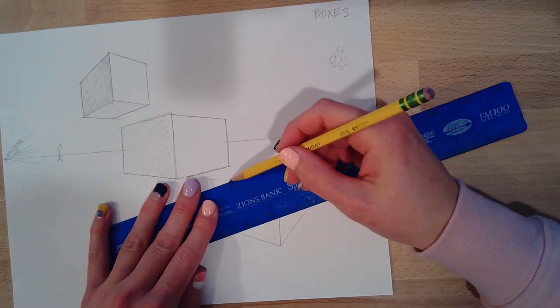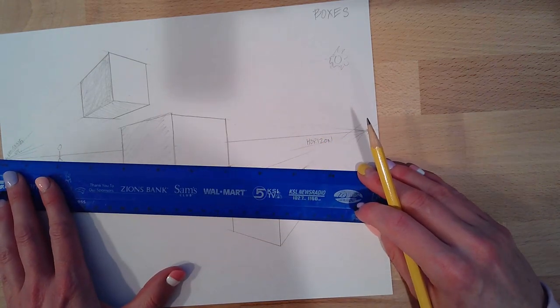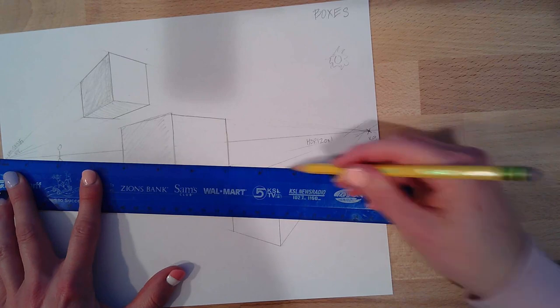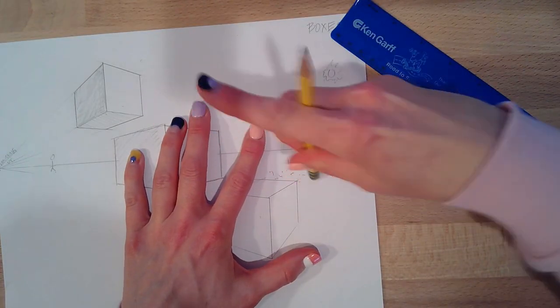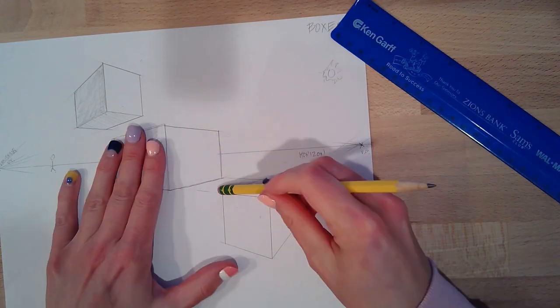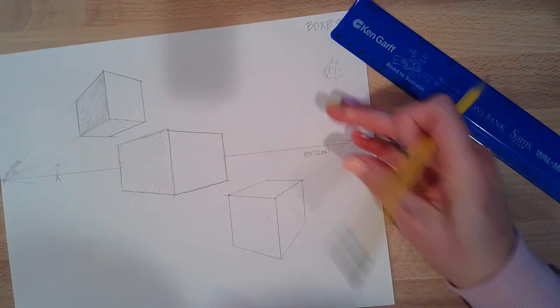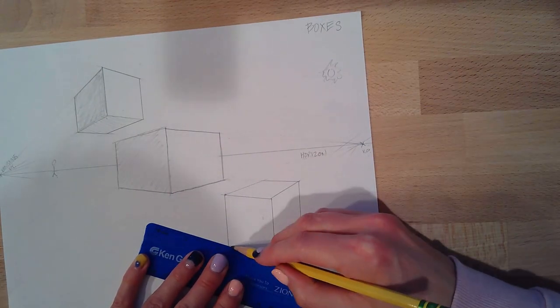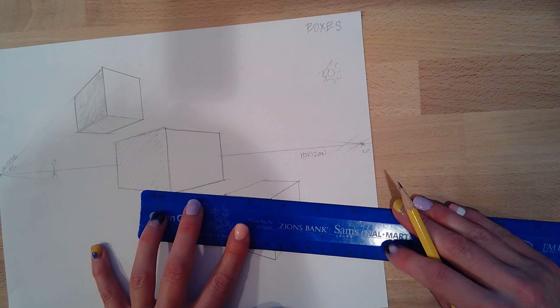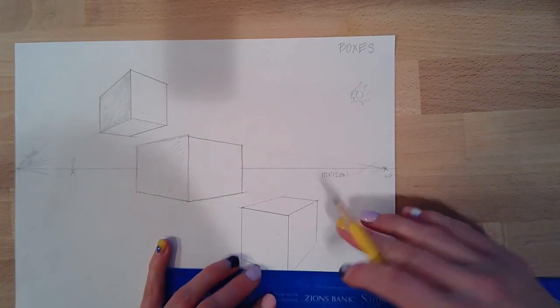And again, super light. Opposite vanishing point, opposite point to the box. And erase any unwanted lines. And I'm going to go through and darken those up. And now what we've created is a box on the horizon, above, and below. And you almost look like a true architect.